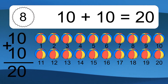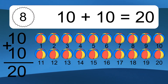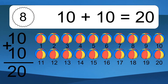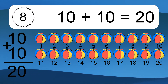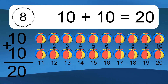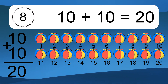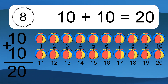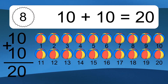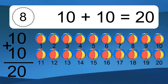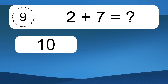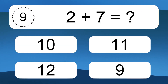10 plus 10 equals what? Let's count it. 1, 2, 3, 4, 5, 6, 7, 8, 9, 10, 11, 12, 13, 14, 15, 16, 17, 18, 19, 20.